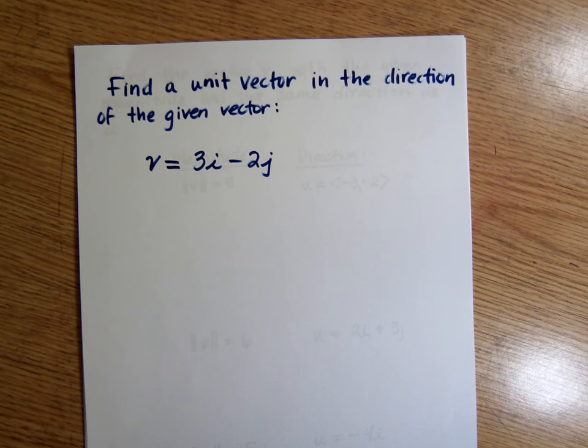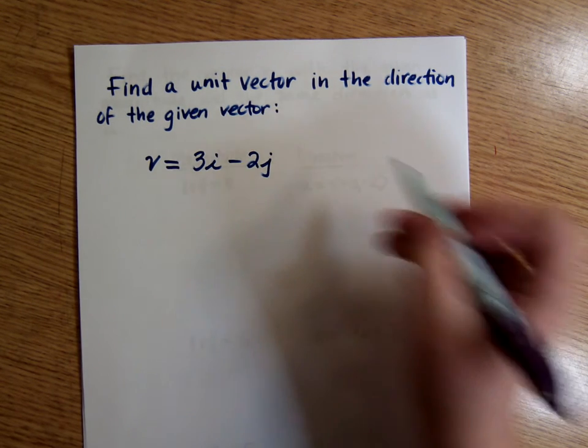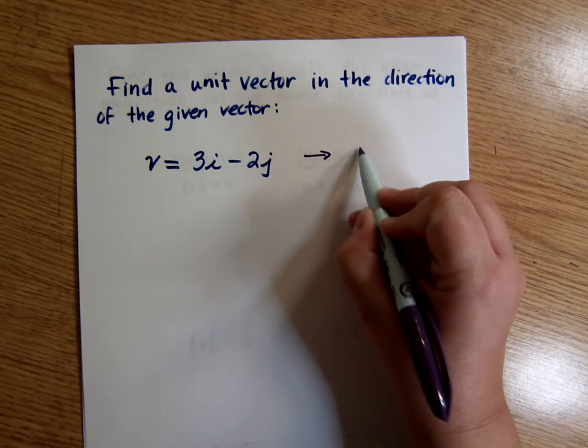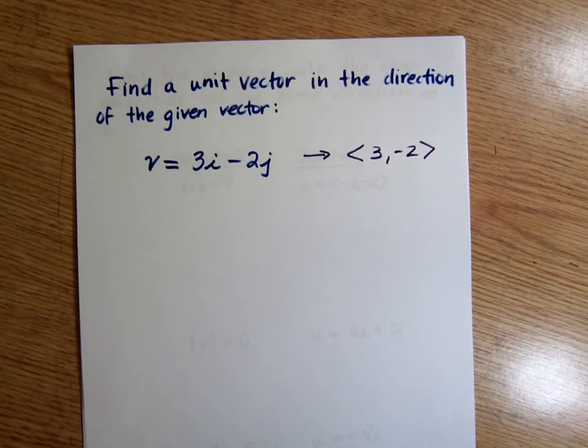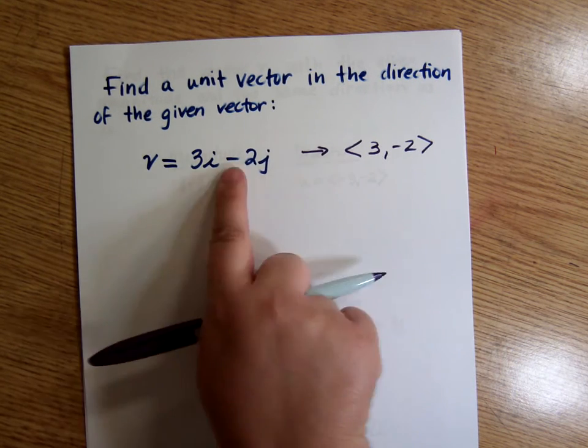So first we have find a unit vector in the direction of the given vector. Now we've done this with vectors given to us in component form, and for this vector that would mean 3, negative 2. Okay, so how does this work? How is this going between this and this?